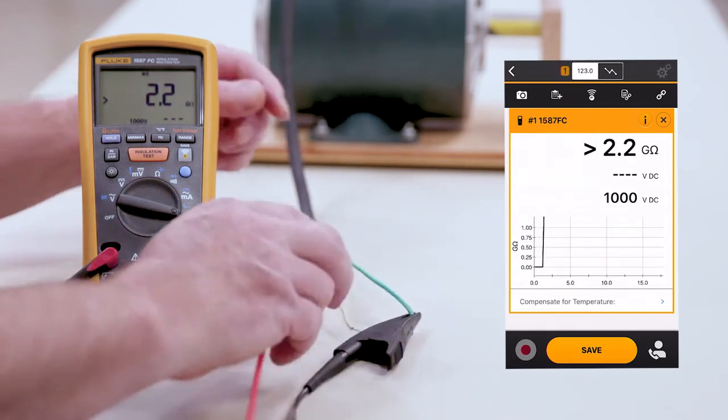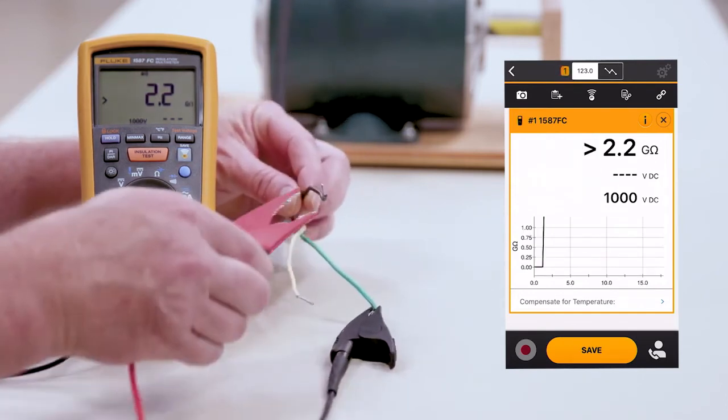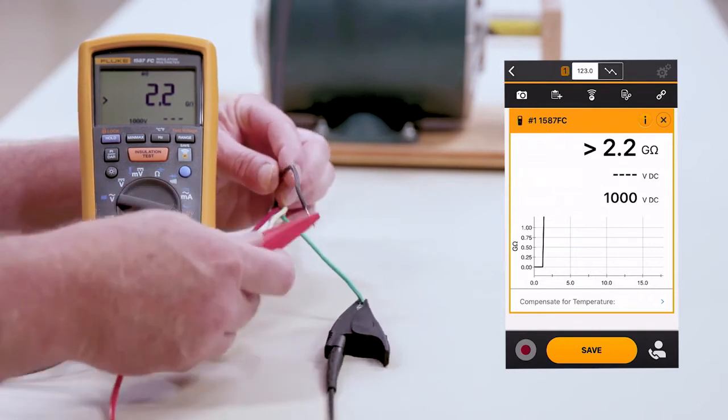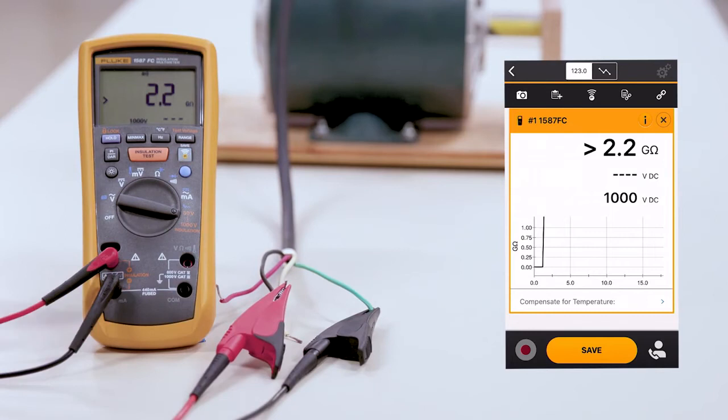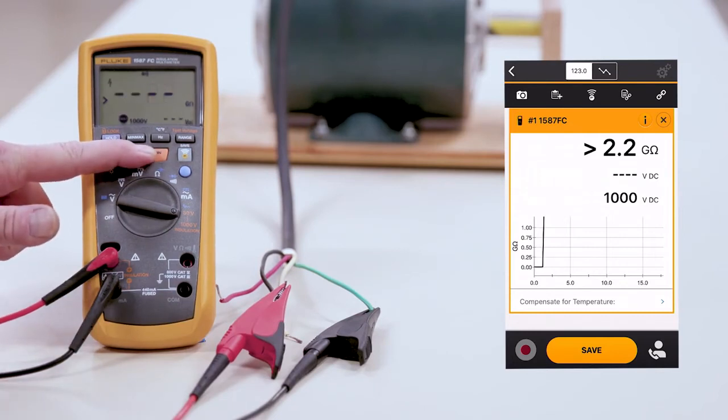We're going to change the next leg by going to the black leg, as you can see here. And again, by hitting the Test button, we can perform the test.